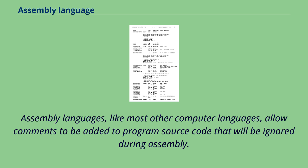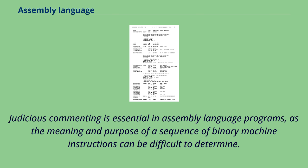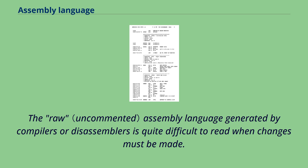Assembly languages, like most other computer languages, allow comments to be added to program source code that will be ignored during assembly. Judicious commenting is essential in assembly language programs, as the meaning and purpose of a sequence of binary machine instructions can be difficult to determine. The raw assembly language generated by compilers or disassemblers is quite difficult to read when changes must be made.